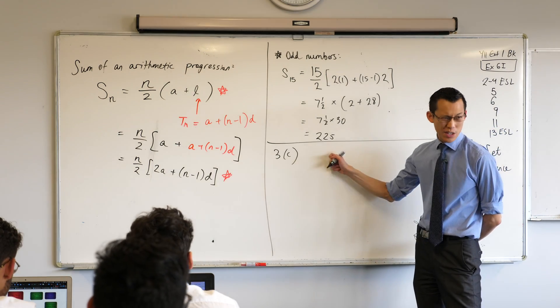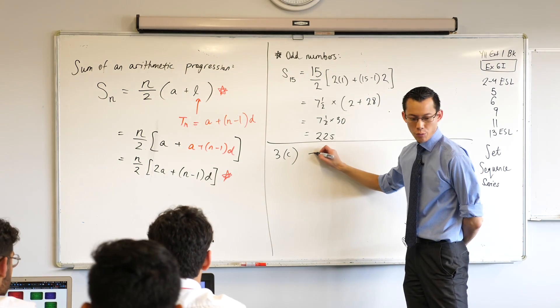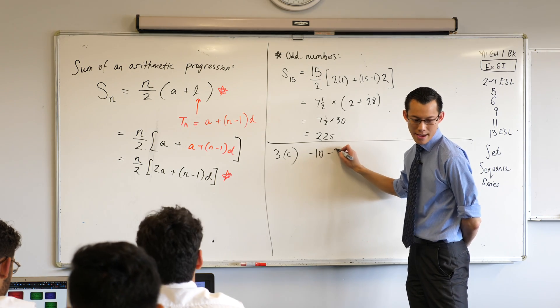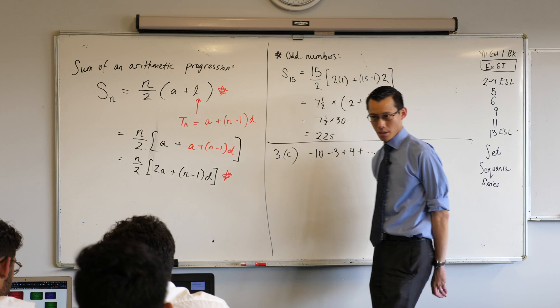So for starters, can we just write down the arithmetic series that they've got there? So it starts with minus 10, minus 3, plus 4, plus dot dot dot, plus 60.